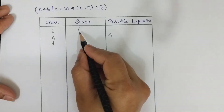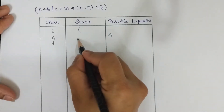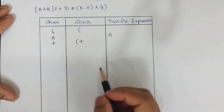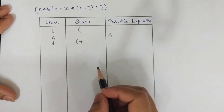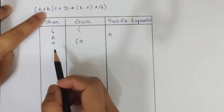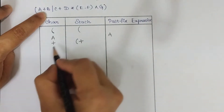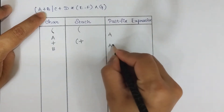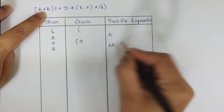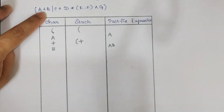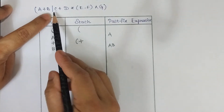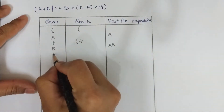Before pushing, check the top of the stack — the top of the stack is open parenthesis. So insert the operator next to the open parenthesis without checking any condition. The next character is 'B', which is an operand — append it to the postfix expression alongside A. The next character is the division operator.